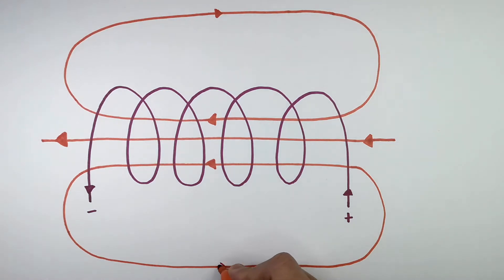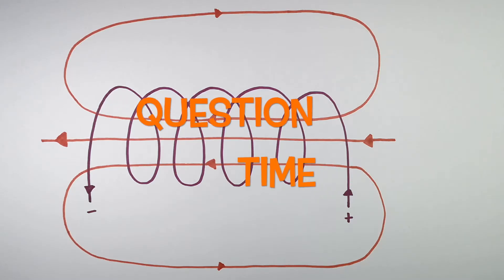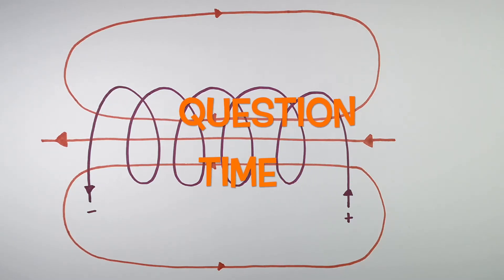The magnetic field lines outside of the solenoid represent that of a bar magnet. It's question time, attempt these questions to check your understanding.